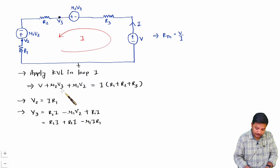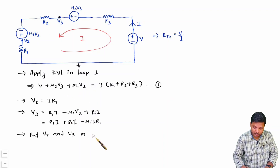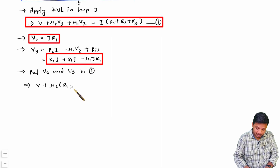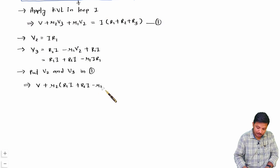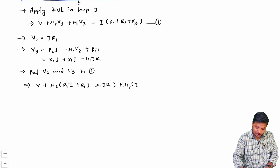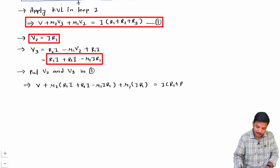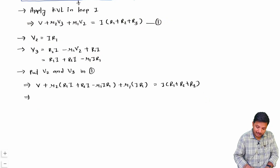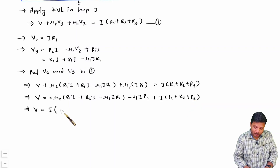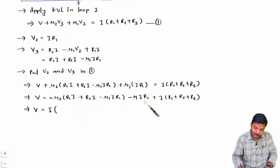Substituting into equation 1: V + μ2·V3 + μ1·V2 = I·(R1 + R2 + R3). Replacing V3 = I·(R1 + R2 − μ1·R1) and V2 = I·R1, and moving all terms to one side: V = I·(R1 + R2 + R3) − μ2·(R1·I + R2·I − μ1·R1·I) − μ1·R1·I. Taking I as common and grouping R1, R2, R3 terms separately.